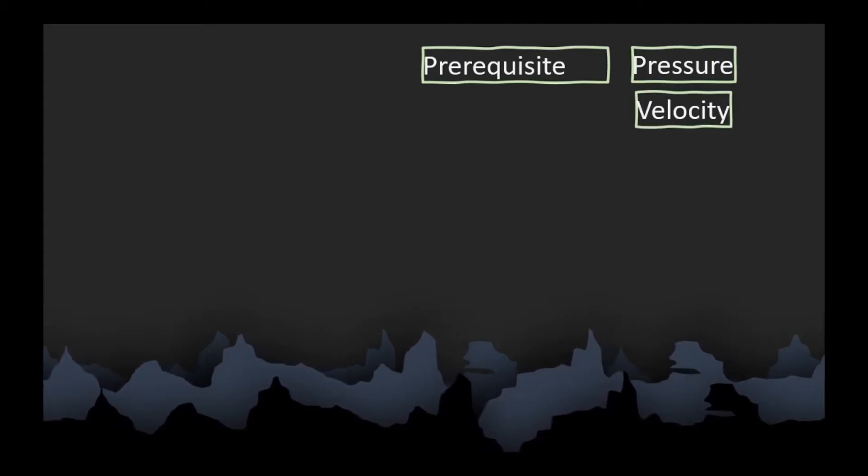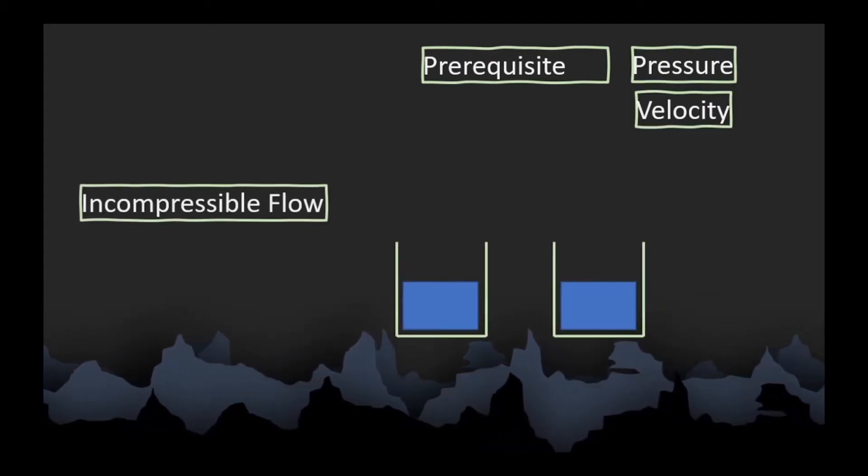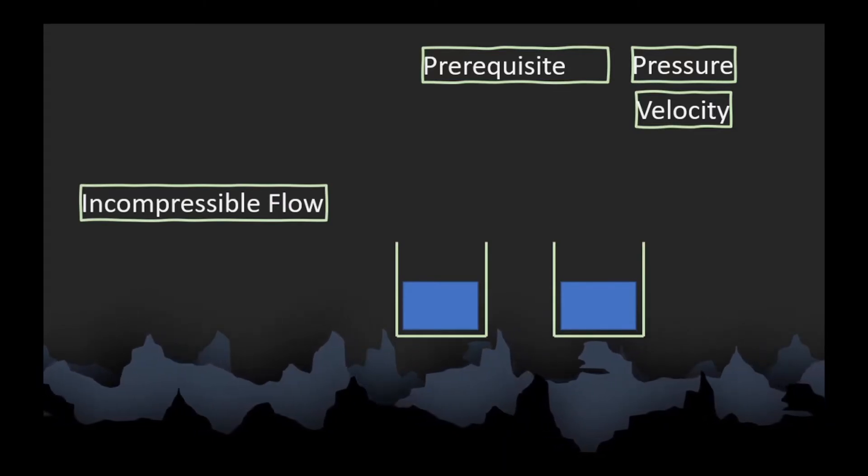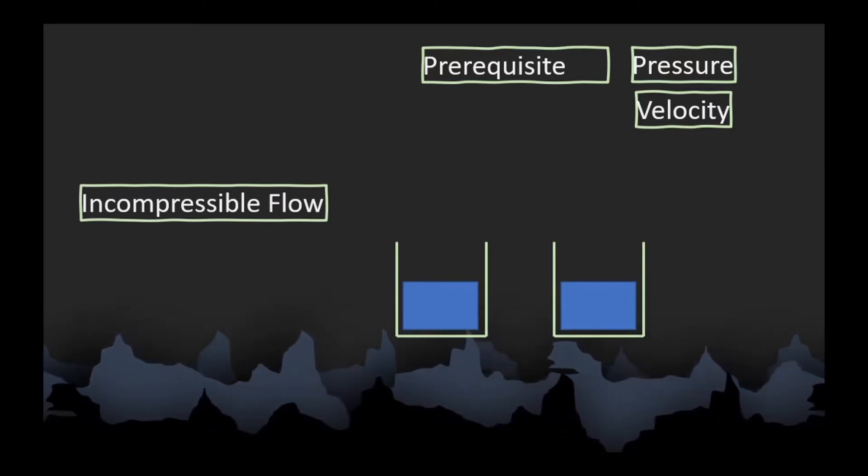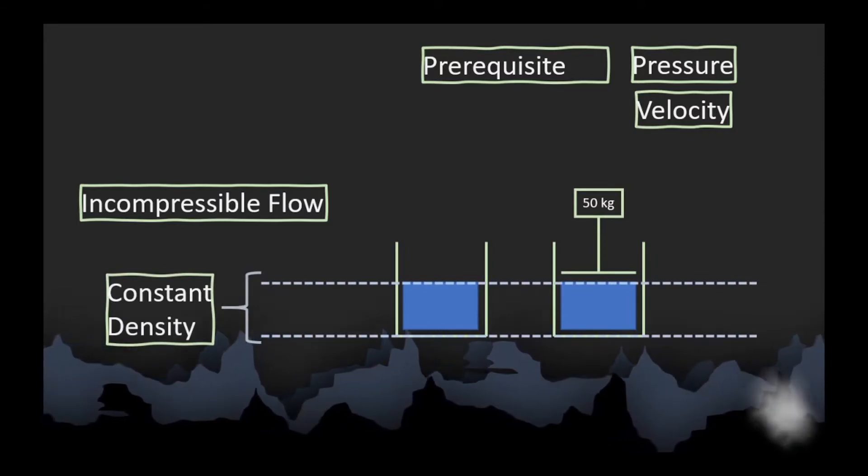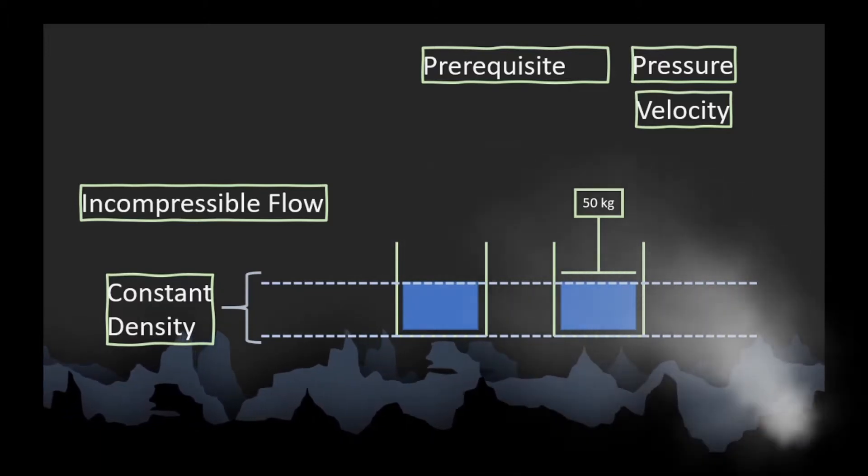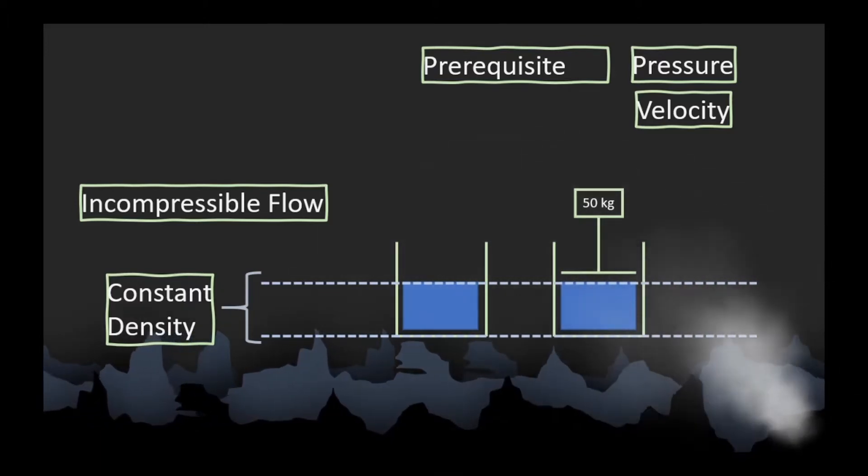You must have some knowledge about pressure and velocity for the following concept. Before that, we need to know about incompressible flow. In fluid mechanics, an incompressible flow refers to a flow in which the material density is constant. By nature, no fluid is incompressible, but any fluid can be approximated to an incompressible flow at certain conditions.